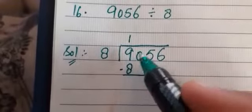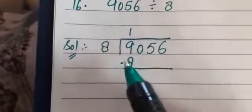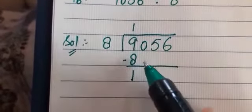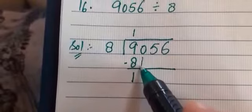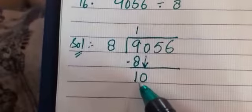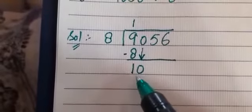All right, so from this 9 we will subtract 8. 9 minus 8 gives us 1. Okay, again we cannot divide 1 by 8, so what we have to do: we have to bring the next number down, which is 0.